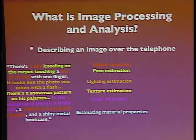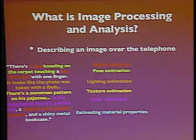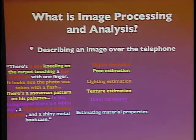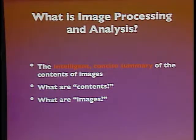If you actually model the way light from a camera flash interacts with a material like velvet, and how that gives rise to an image of a velvet coat shot with a flash, it is tremendously complicated. That makes the whole process of getting a computer to automatically describe photographs over the telephone very, very complicated. To summarize, my favorite way to describe this area of study is that it's about the intelligent and concise summary of the contents of images.